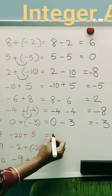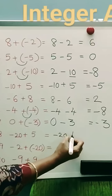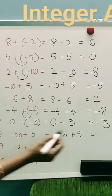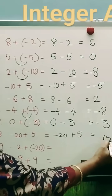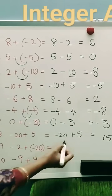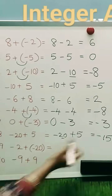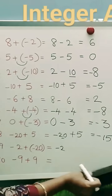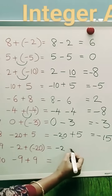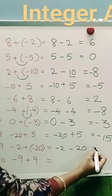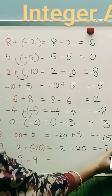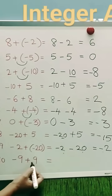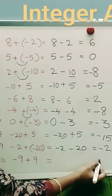Minus 20 plus 5: 20 minus 5 is 15, sign of the bigger number is minus. Minus 2 minus 20: minus 22. Both are negative numbers, we have to add and sign it with a minus. Minus 9 plus 9 is 0.